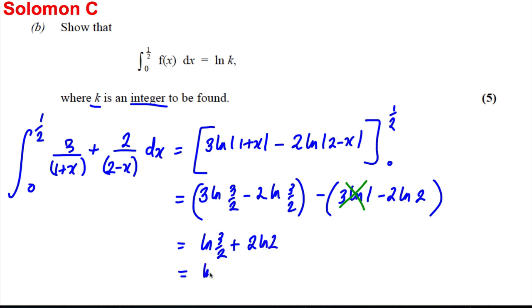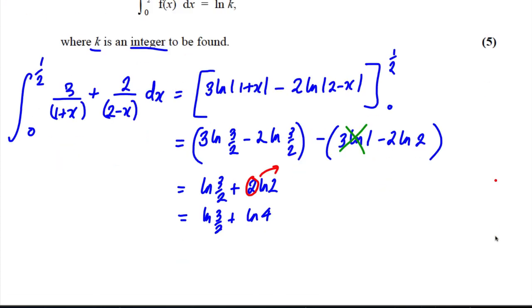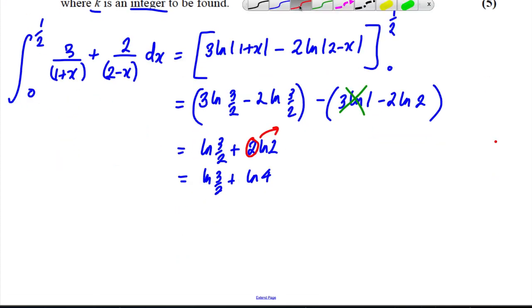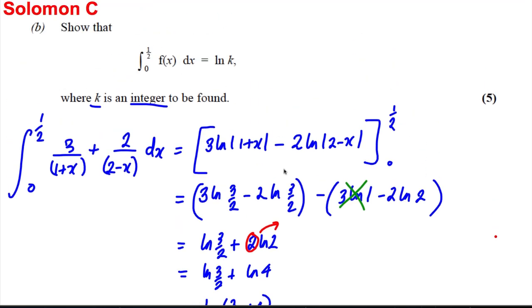So this is ln 3 over 2 plus ln 4, bringing that 2 up as a power of 2. So it's ln 2 squared. And then we've got this is equal to ln 3 over 2 times 4. 1.5 times 4 is 6, so ln 6 is our answer. And k is equal to 6.